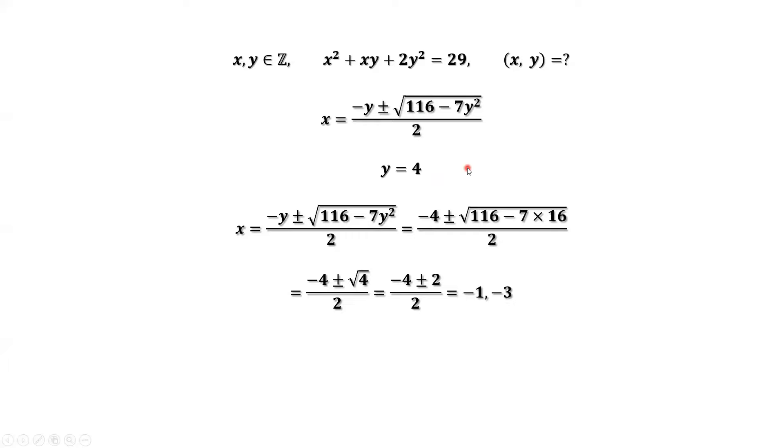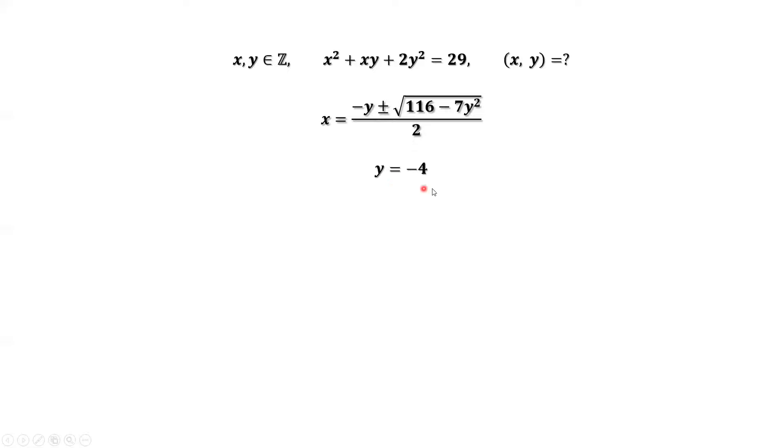Next we need to solve this equation when y equals -4 to find the x values. Replace y by -4. Simplify this part. We can get x equals 3 and 1. These are corresponding to y equals -4.